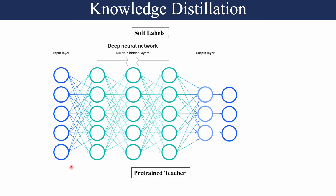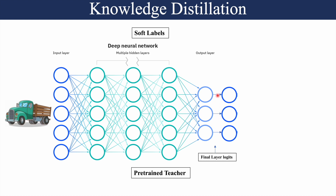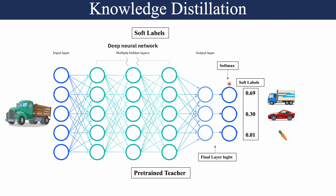We have a deep neural network called the teacher network, which has been pre-trained on a specific dataset. After pre-training, if we take any image — say an image of a truck — and pass it through this neural network, we get some final layer logit values. When we pass these final layer logits through the softmax activation function, we get a probability distribution known as the soft labels. Associated with this image in the dataset, we already have its hard labels.